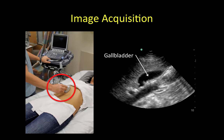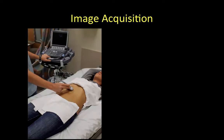Rotate and tilt the transducer with small movements until the gallbladder is seen in its true longitudinal orientation. In a longitudinal plane, the relationship between the thick-walled portal vein and the gallbladder is often viewed as an exclamation point, with the hyperechoic main lobar fissure connecting the two structures. The gallbladder should also be viewed in a transverse orientation by rotating the transducer 90 degrees, with the transducer marker pointing to the patient's right. Viewed in transverse orientation, the gallbladder has a circular shape.